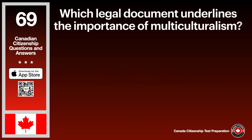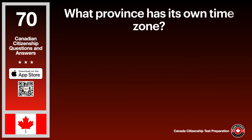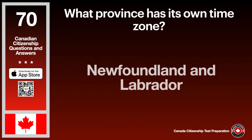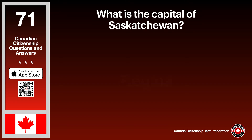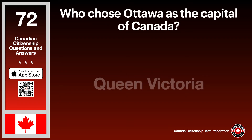Which legal document underlines the importance of multiculturalism? The answer is the Canadian Charter of Rights and Freedoms. What province has its own time zone? The answer is Newfoundland and Labrador. What is the capital of Saskatchewan? The answer is Regina. Who chose Ottawa as the capital of Canada? The answer is Queen Victoria.